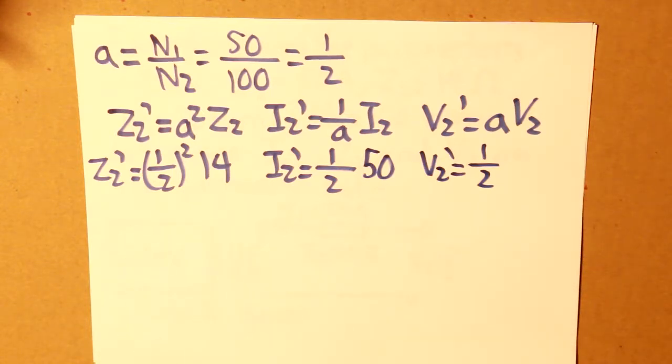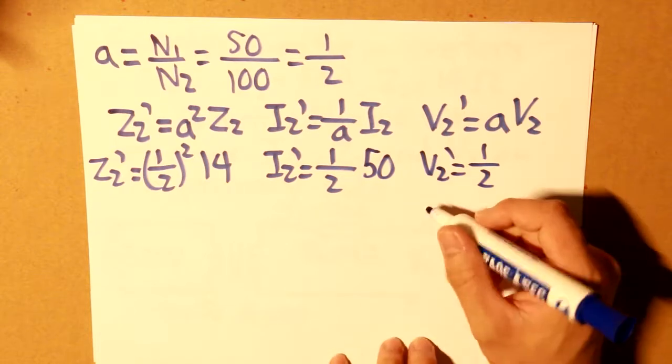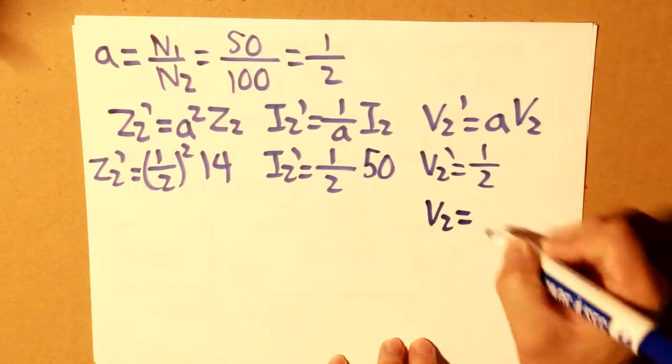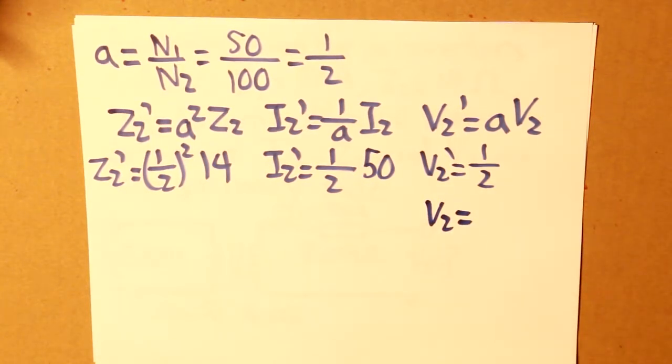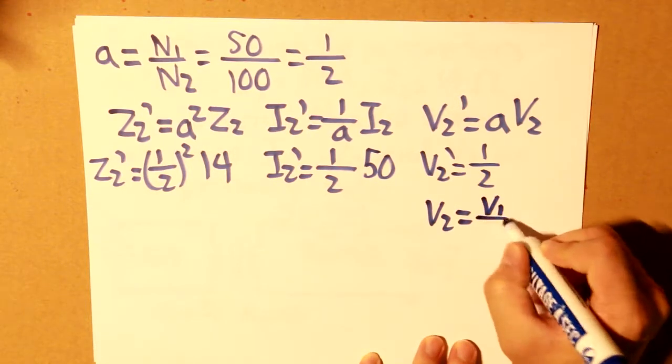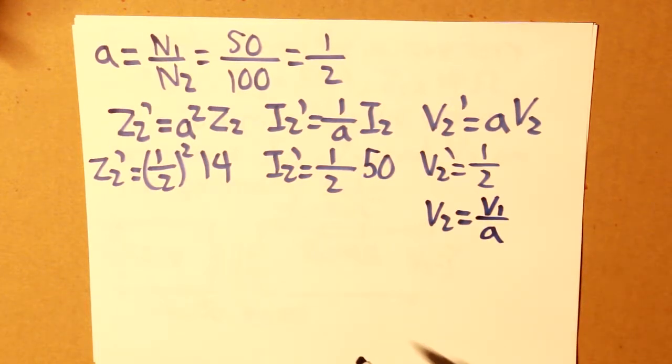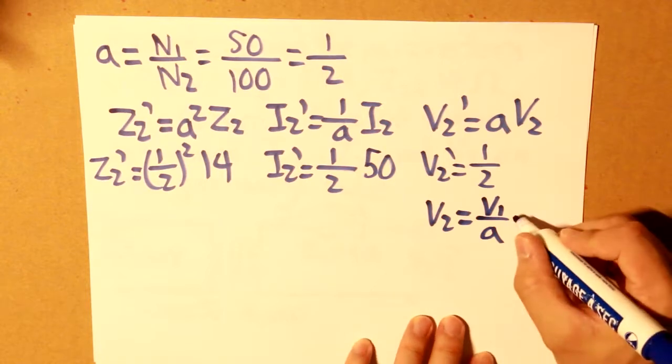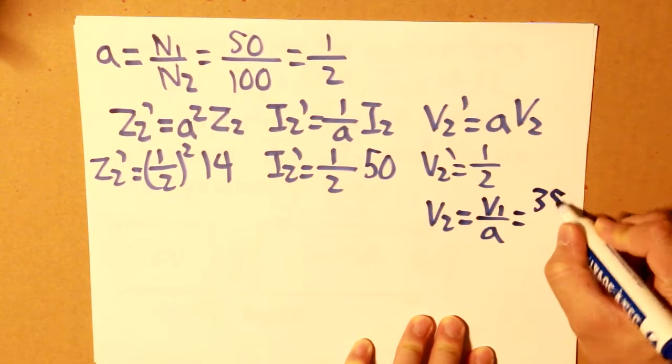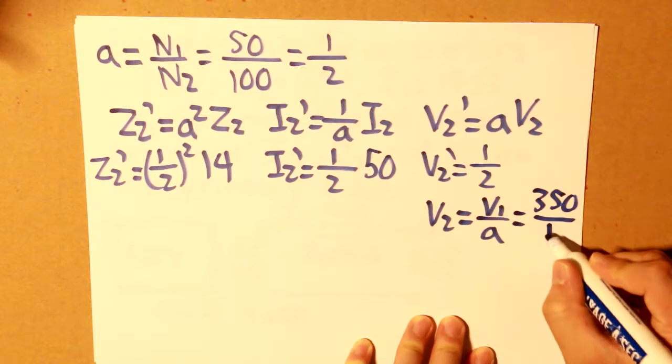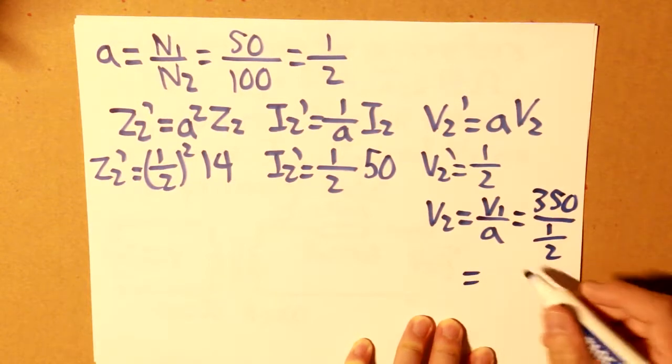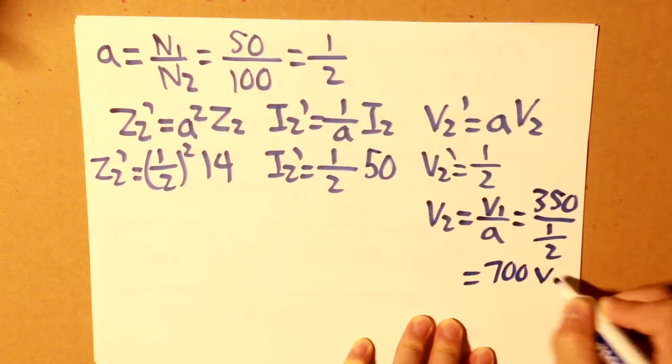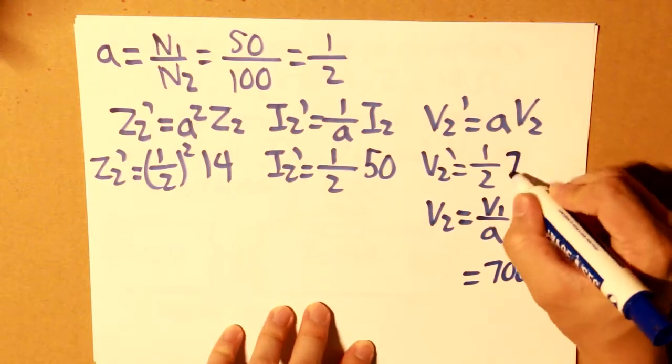So first off, let's determine v2. V2 is equal to v1 over a. V1 is 350, a is 1 over 2, so v2 therefore is 700 volts. So now we have 700.